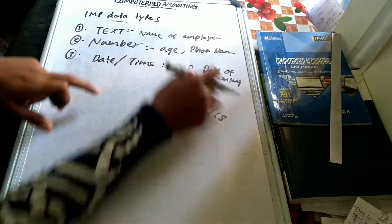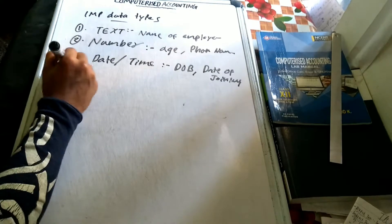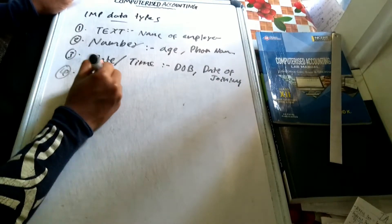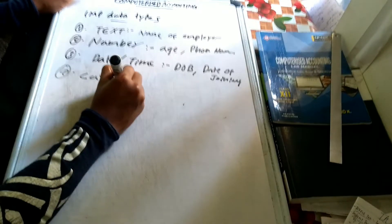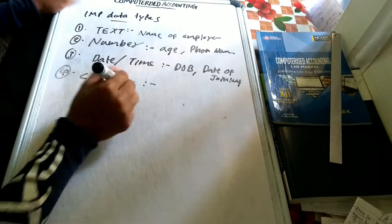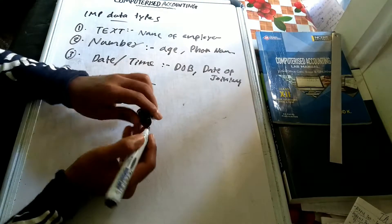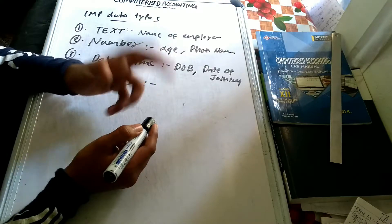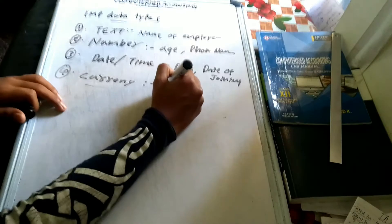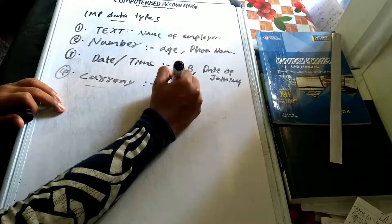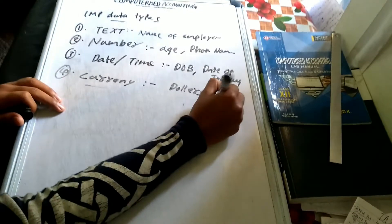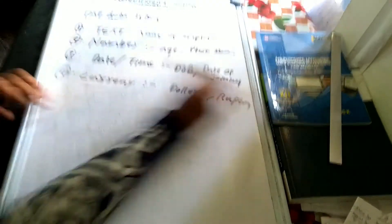Next is currency. Currency is used for storing numbers in terms of currency — for example, dollars and rupees.